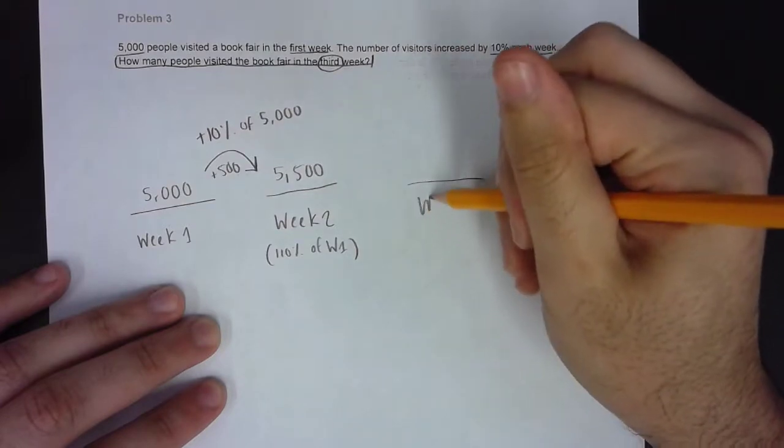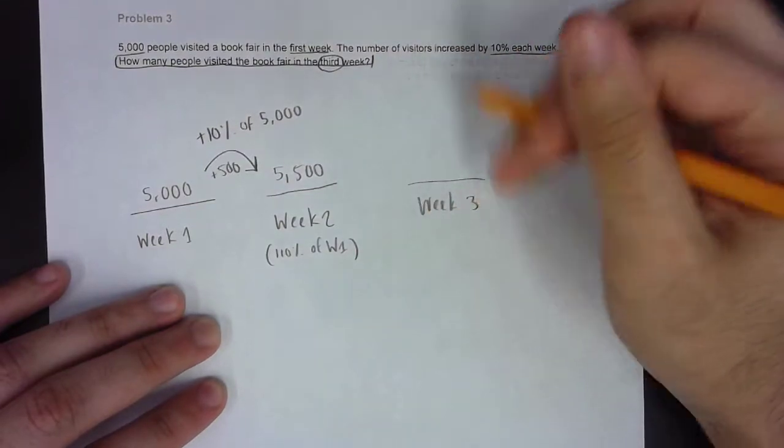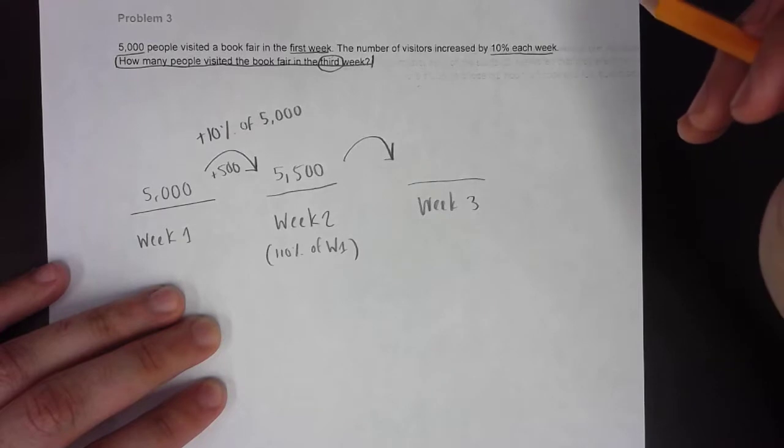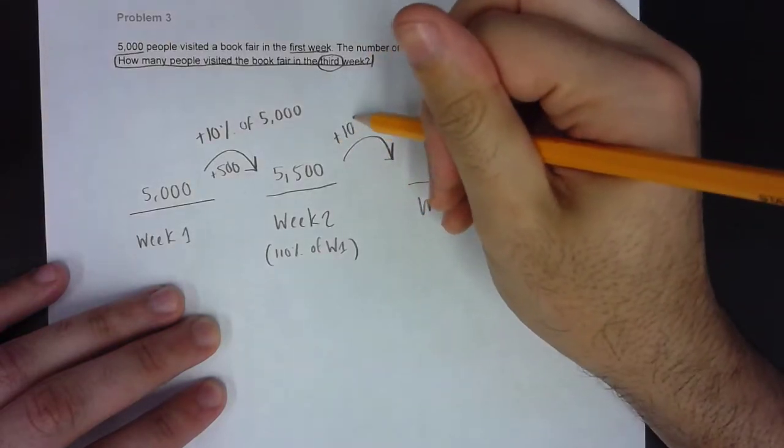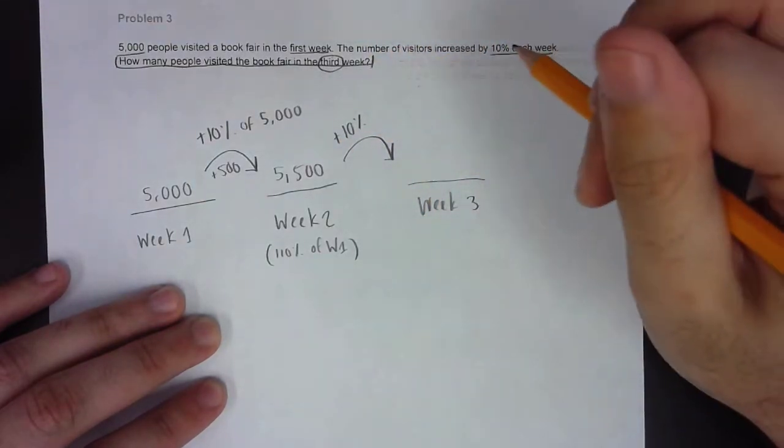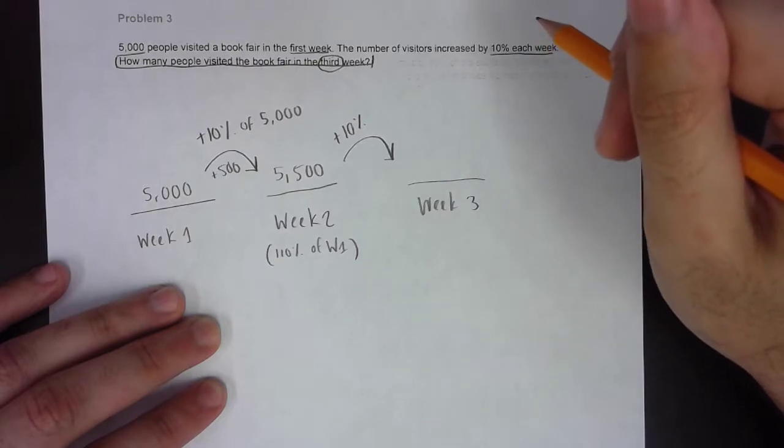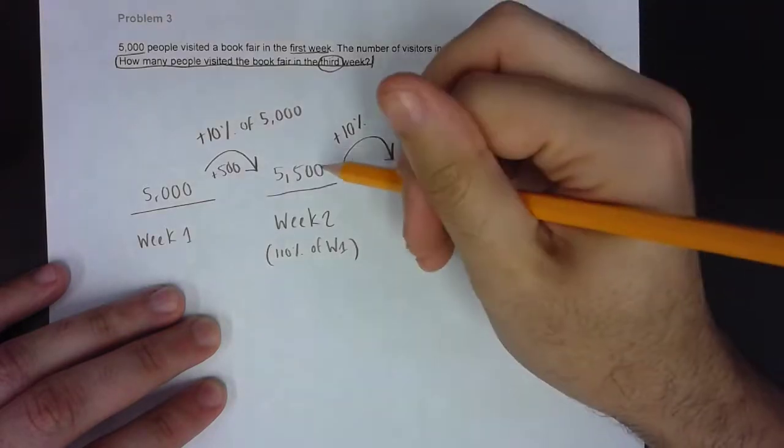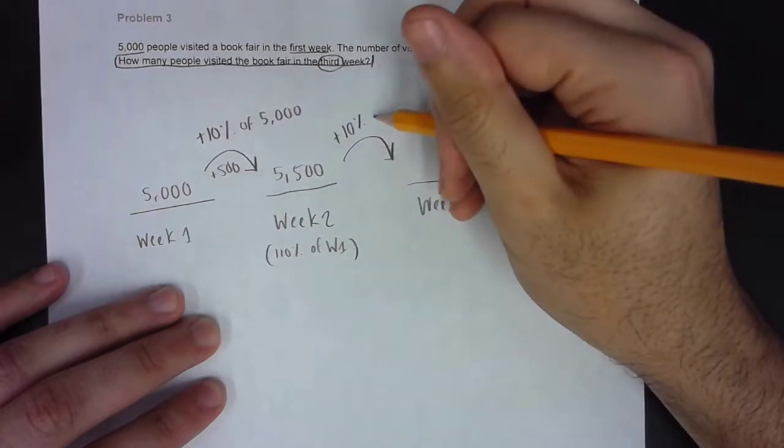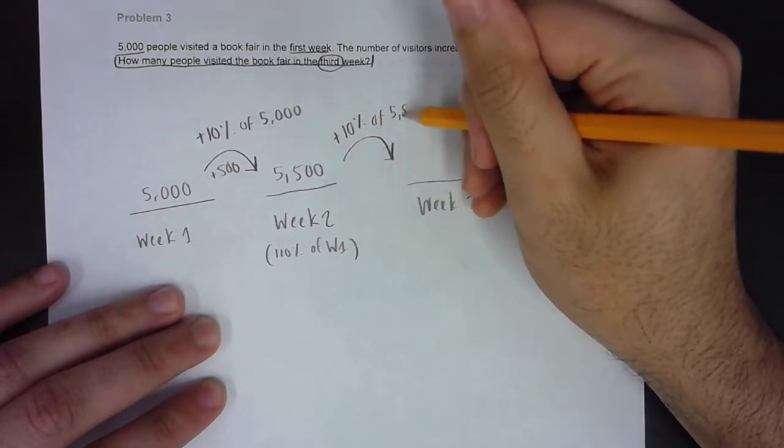Again, to get to week three's visitor total, there's an increase again of that same 10%. However, this 10% is not 10% of the week one total. It is not 10% of 5,000. It is 10% of week two, which is 10% of 5,500.